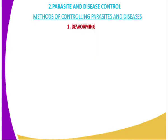The second routine management on livestock rearing is parasite and disease control. We covered the first one, feeding, as routine management in the previous lesson. A parasite is an organism which normally lives on another organism at the expense of the other one — for example, a tick. Parasites are supposed to be controlled so that you can end up having high levels of production.